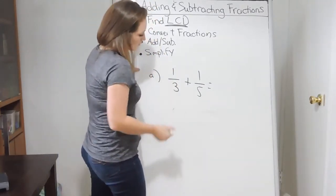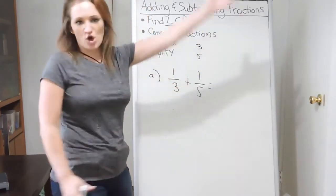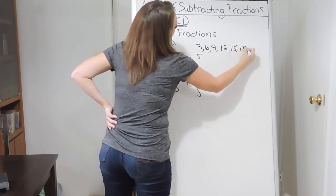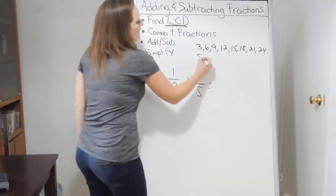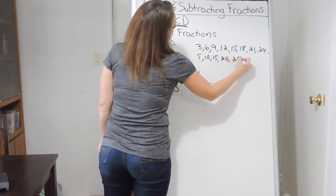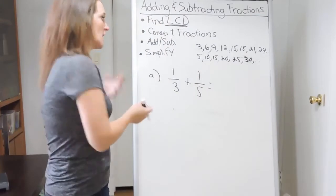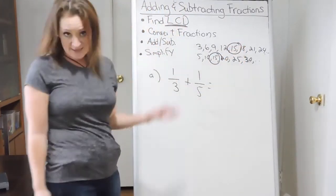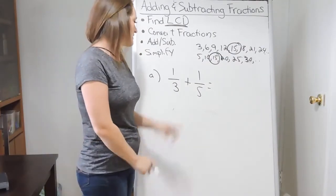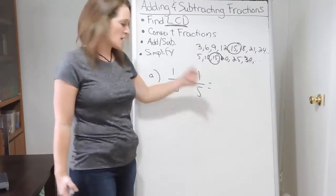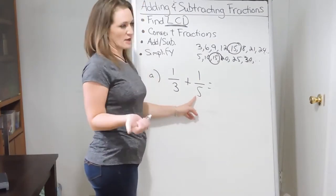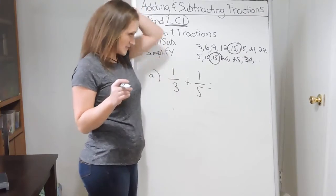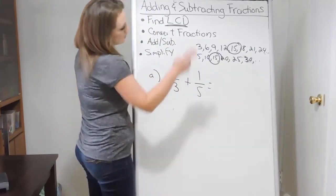Another process: check whether the smaller denominator goes into the larger one. Does 3 go into 5? No. Run multiples of 5: after 5, then 10 — does 3 go into 10? No. Next is 15 — does 3 go into 15? Yes. So 15 works. There are a few different processes to find the lowest common denominator, and ours is going to be 15.